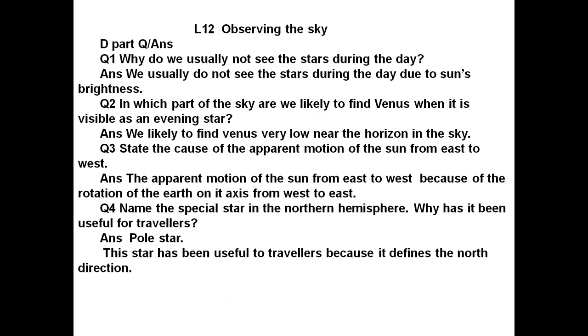Question number three. State the cause of the apparent motion of the sun from east to west. Answer is, the apparent motion of the sun from east to west because of the rotation of the earth on its axis from west to east.